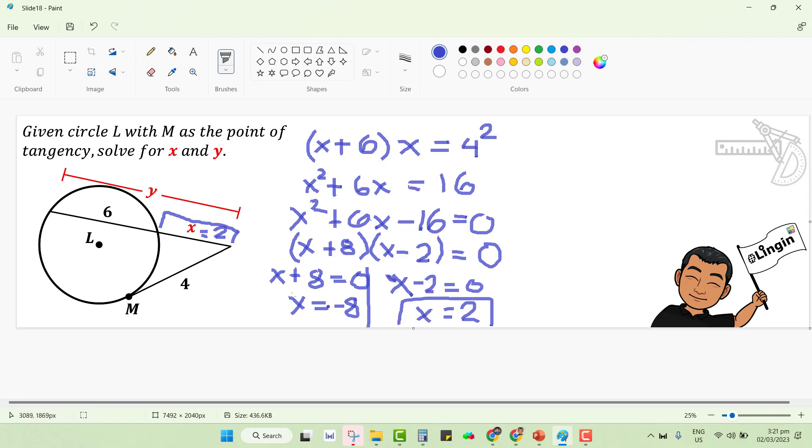Let us try to check and verify just by using the numerical values. If we are going to multiply the entire segment, that is actually 6 and 2, plus 2 is 8. 8 times the exterior segment, which is 2, that's 16. And then you have 4 squared, 16. That means our answer is correct.